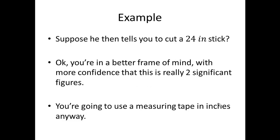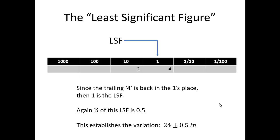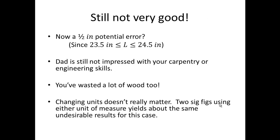Suppose he tells you to cut a 24-inch stick. You're starting to feel better - you've got two significant figures, and you're going to be using a measuring tape in inches anyway. Let's put the 24 in and see what we have. The four is in the ones place, so one is the least significant figure. Half of this is a half. So this establishes the range 24 plus or minus a half an inch. Our length could be anywhere from 23 and a half inches to 24 and a half inches.